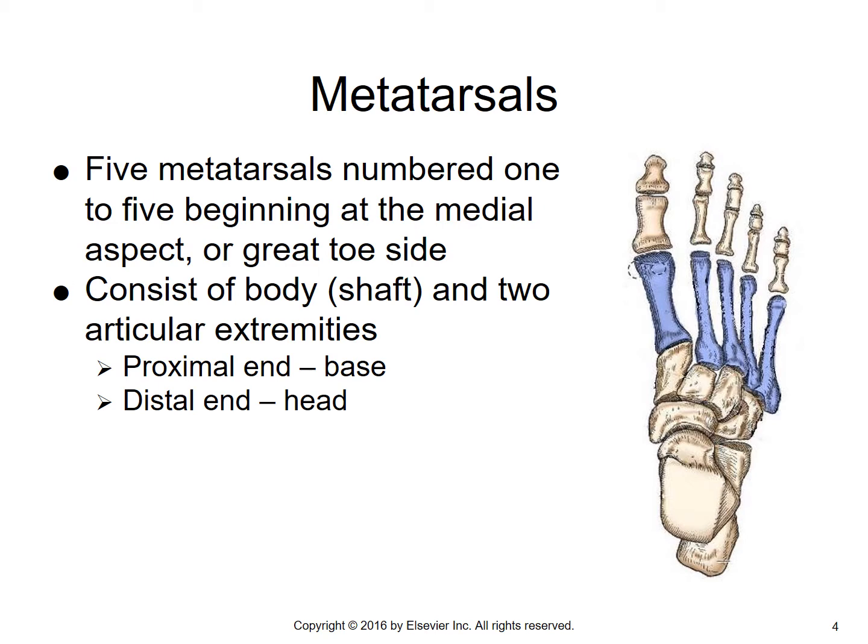The next group of bones that comprise the foot are the metatarsals. There are five of them, numbered just like we numbered in the hand — from the big toe side. So we've got the first metatarsal, the second, third, fourth, and fifth metatarsal. Each metatarsal, similar to each metacarpal, has a base, a body, and a head.